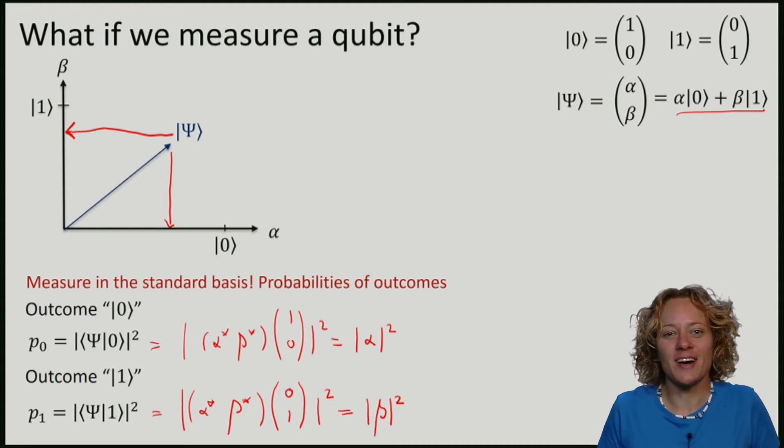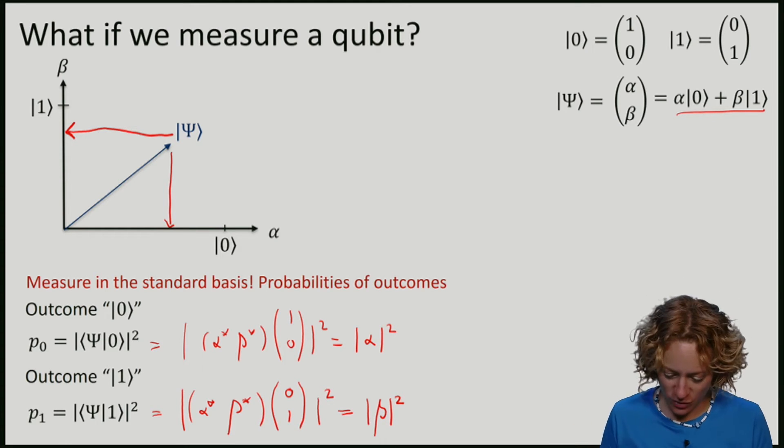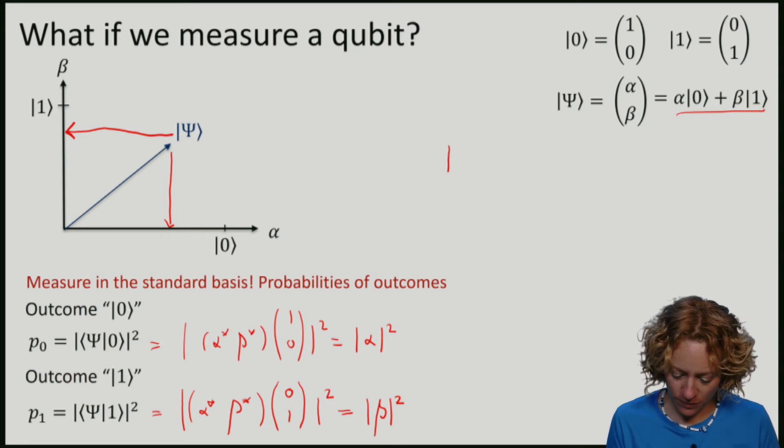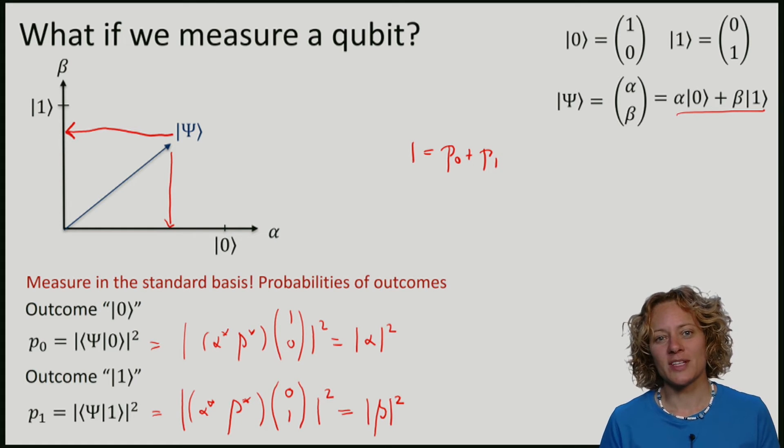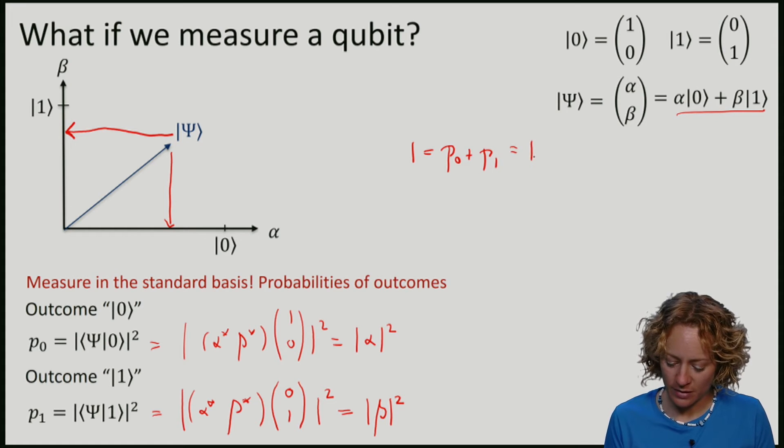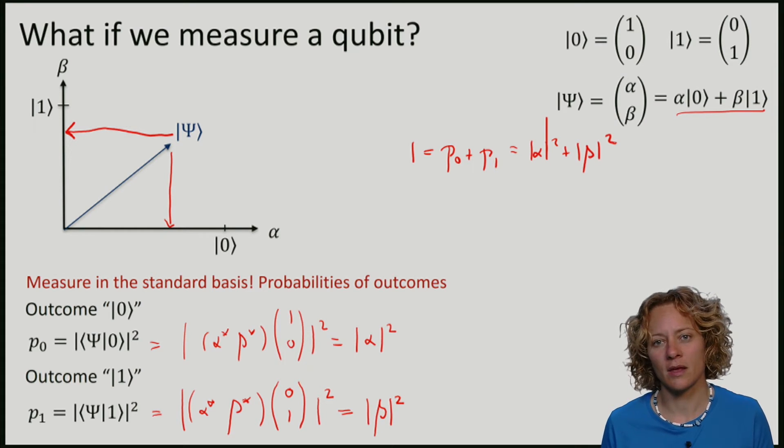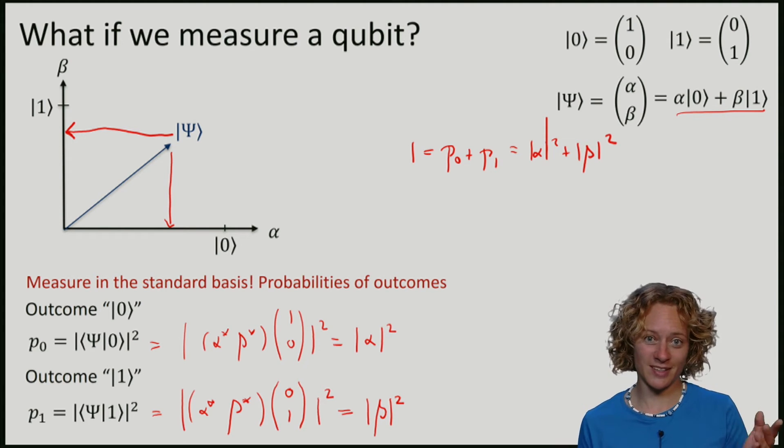So evidently, if we ask is it 0 or 1, then these probabilities should add up to 1. So the sum of the probabilities of seeing a 0 plus the probability of seeing a 1 is given by alpha squared plus beta squared. And remember that because our qubit was normalized, this was precisely 1.